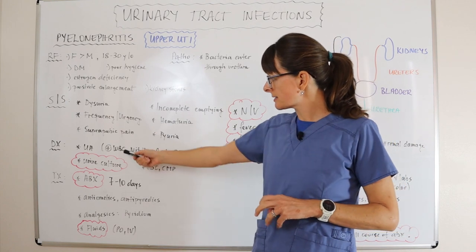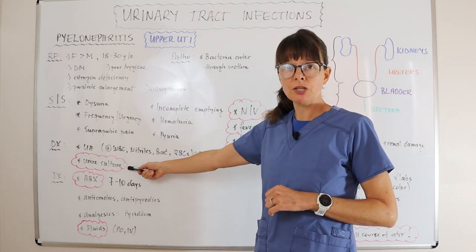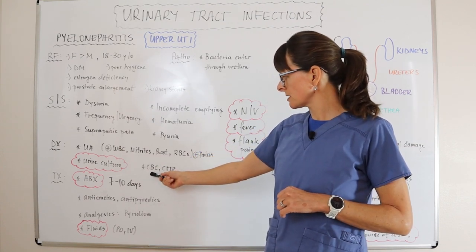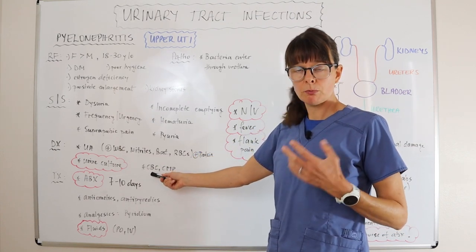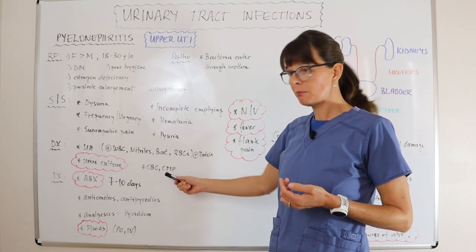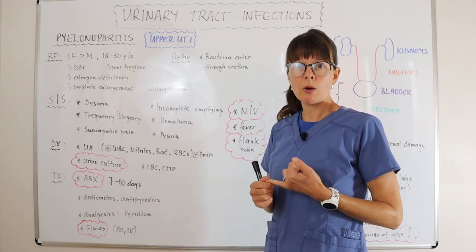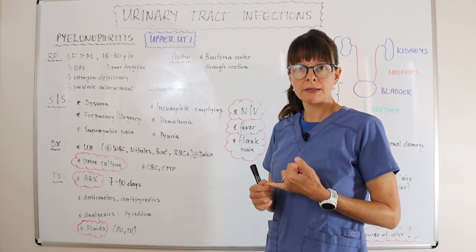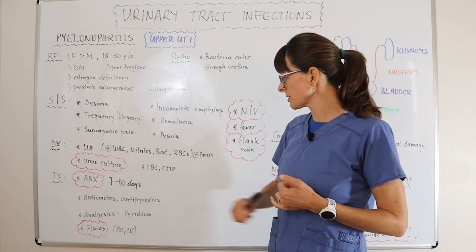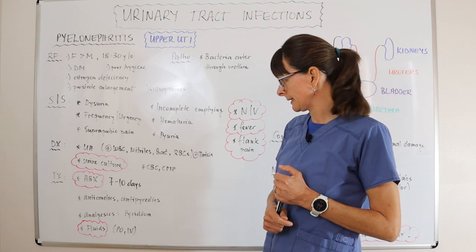We want to send the urine sample for culture to check exactly what bacteria is causing the infection. We also want to check a CBC to check the patient's white count, and a CMP to check the electrolytes — specifically potassium, since we always have to be careful about potassium when thinking about the kidneys. The CMP will also show the patient's kidney function with BUN and creatinine.